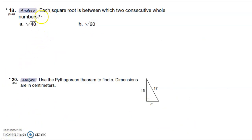Each square root is between two consecutive whole numbers, and we're trying to find that. I know that 8 squared is 64, 7 squared is 49, 6 squared is 36. So 40 is between these two, so it's going to be between 6 and 7. 4 squared is 16, 5 squared is 25, so it's going to be between 4 and 5, because 20 is between that and 40 is between that.